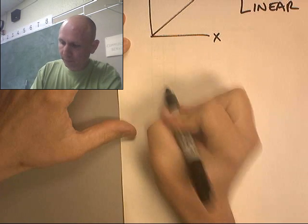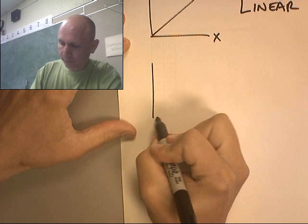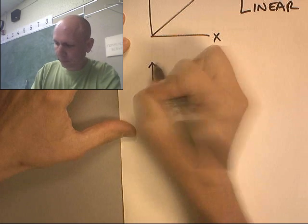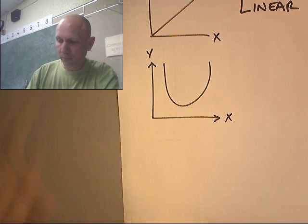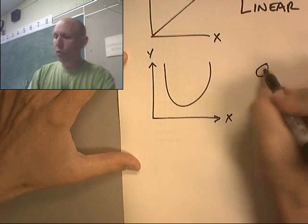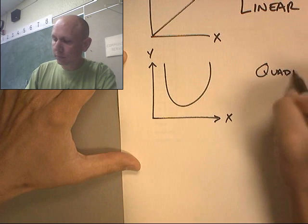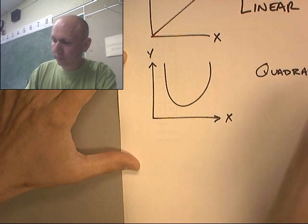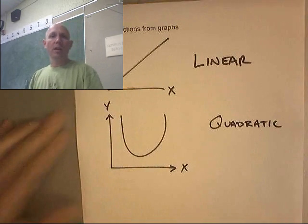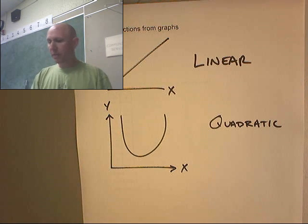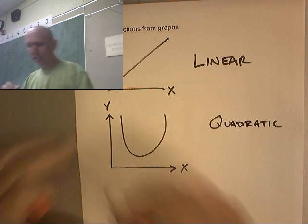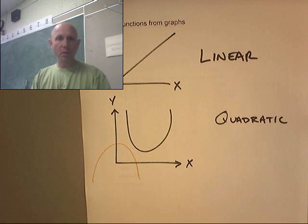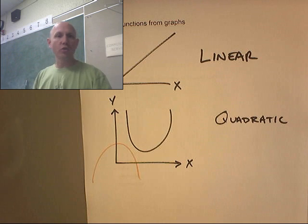Kind of a u-shaped thing. This is called a quadratic. Quadratic. If it makes a u, it can make an upward u. It could also make a downward u. And it could be over into the different quadrants. That's called a quadratic. And then the last one.